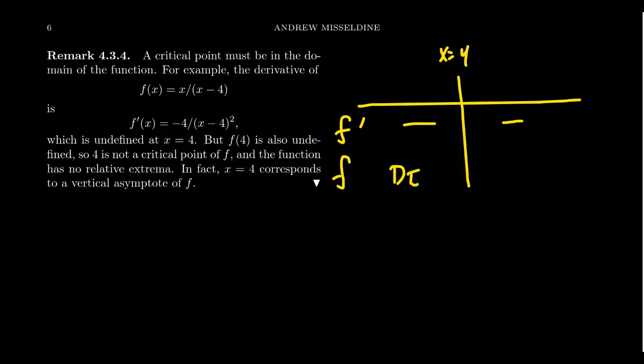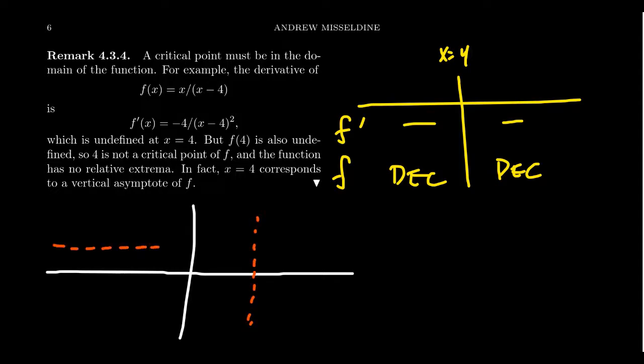The function f would be decreasing and then decreasing again. If we were just to sketch the picture of f(x) real quick here, some things to note is it does have a vertical asymptote at x = 4. It has a horizontal asymptote at x = 1. And if we fill in the rest of the picture, we'll get something like this.